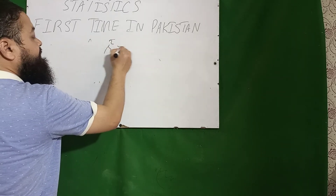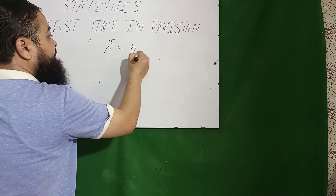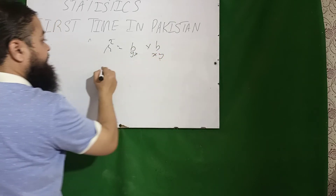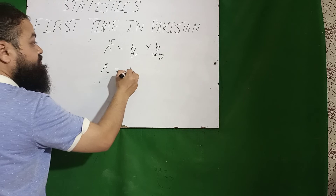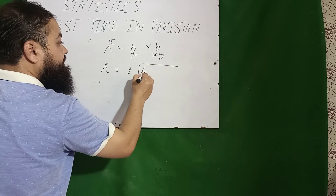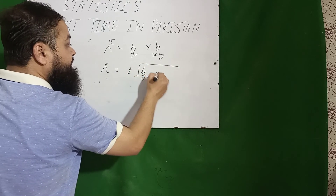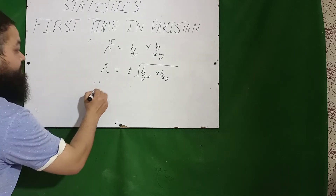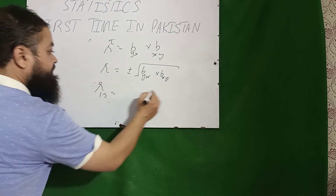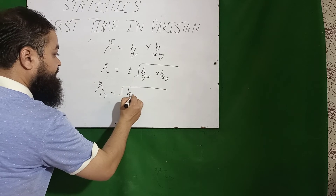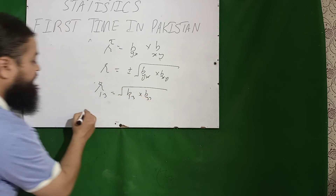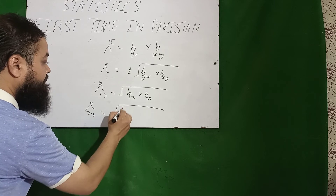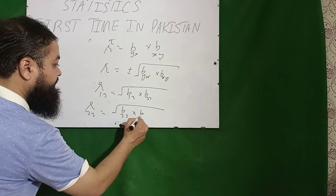R-square is equal to b_yx multiplied by b_xy. I can also write: r = ±√(b_yx × b_xy). For example, r₁₃ = √(b₁₃ × b₃₁), and r₂₃ = √(b₂₃ × b₃₂).